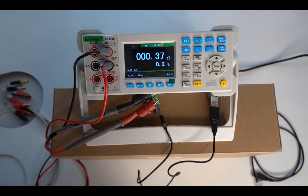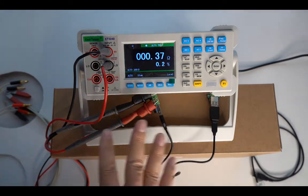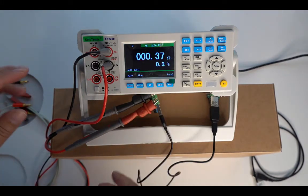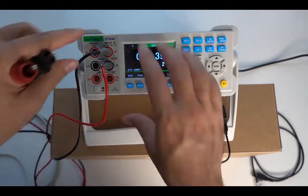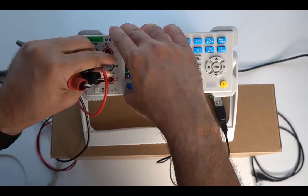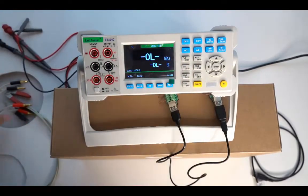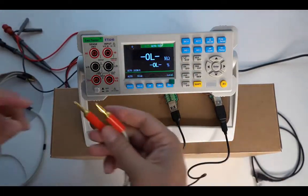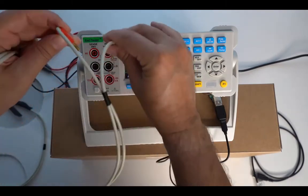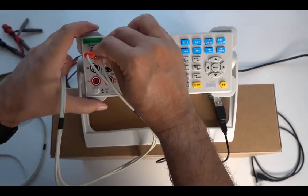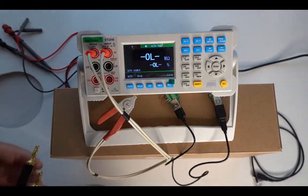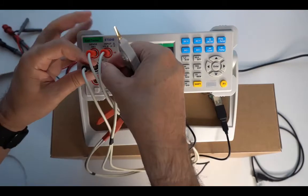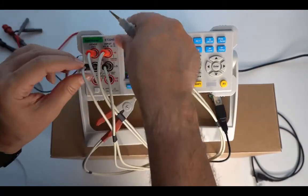And with this bench multimeter, it's possible to negate this by doing a four-wire measurement, what I'm going to do here. So I have two other wires here, Kelvin clips, because it's a four-wire method invented by Kelvin.